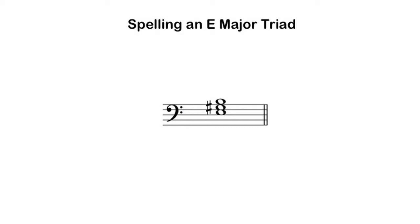For example, E major has four sharps — F sharp, C sharp, G sharp, and D sharp. Only one of those pitches shows up in the triad built on E, so that is the only one that needs to be adjusted with an accidental.